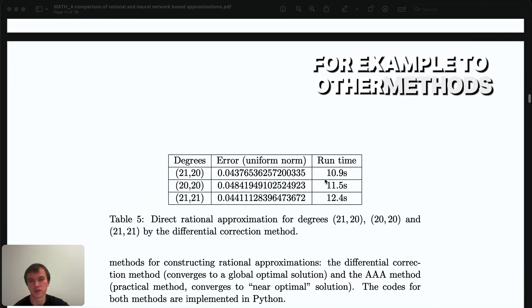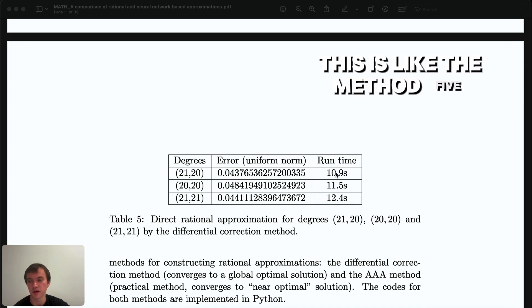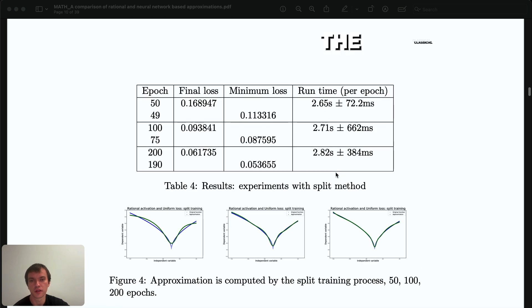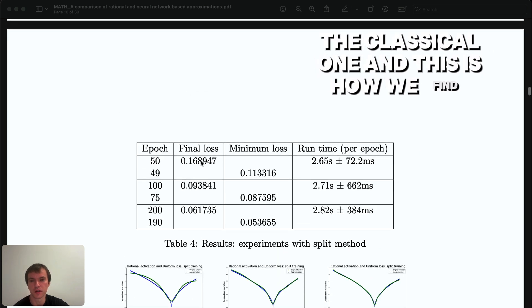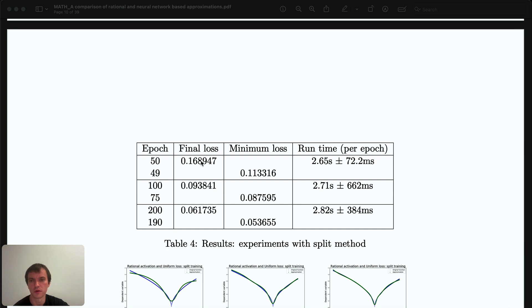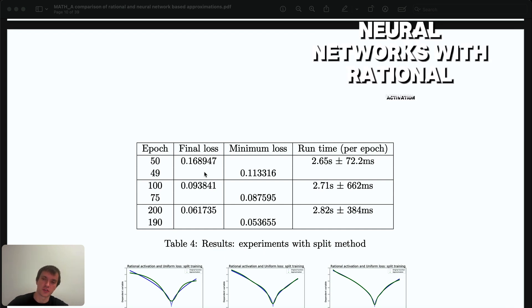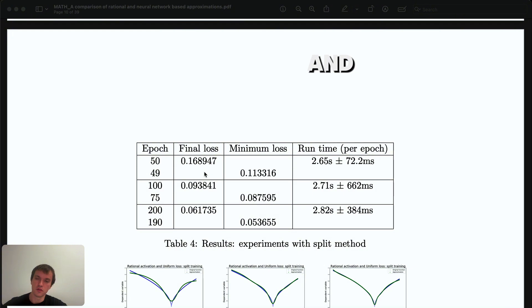And it's super fast in comparison, for example, to other methods. This is the method 5, the classical one, and this is how we find with neural networks with rational activation function. And you can see overall that rational activation function gives pretty bad loss.